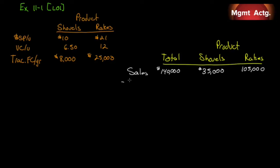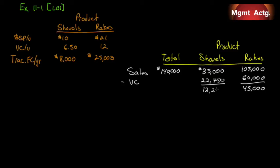Now we subtract variable costs — we've seen contribution margin many times. Variable costs for rakes are $12 per rake; 5,000 rakes gives us $60,000, leaving a contribution margin on rakes of $45,000. For shovels, 3,500 units at $6.50 gives us $22,750, leaving a contribution margin of $12,250. Total variable costs come to $82,750, and total contribution margin is $57,250.